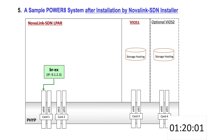Step 5 is the figure of a sample NovaLink SDN system. When the installation is completed, note that the NovaLink LPAR has one or more Ethernet cards. Similarly, each VIOS server can also have one or more Ethernet cards.